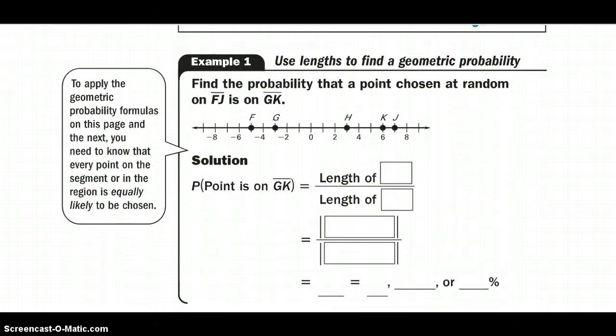So let's put that into an example form. Using the probability of lengths, we want to find the probability of a point chosen at random on FJ would be on GK. So again, the entire length of our segment is FJ. So the entire layer goes on the bottom. So our length of FJ will go on the bottom. And what we want to happen is we wish that point would fall on this segment GK. So that's what is going to go on the top, the length of GK.